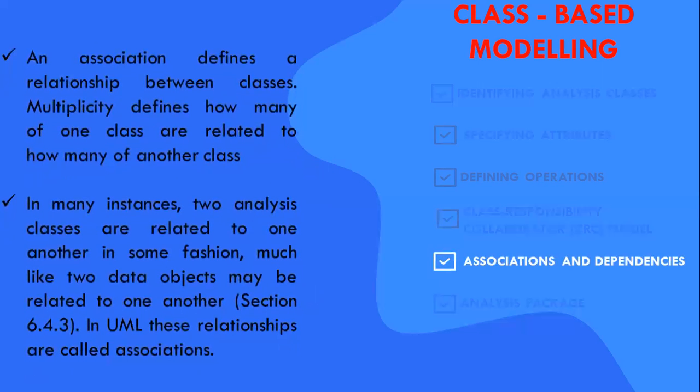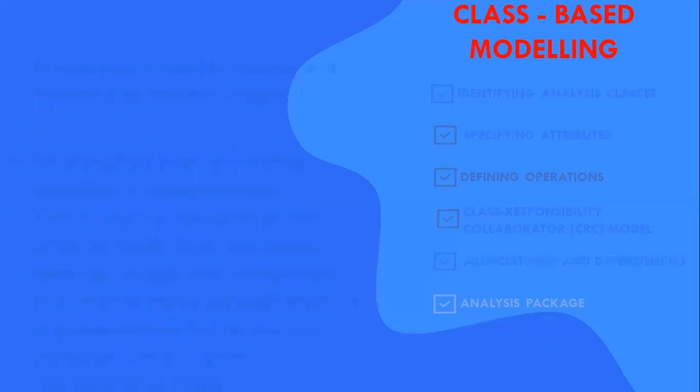Coming to associations and dependencies. In many instances, two analysis classes are related to one another in some fashion, just like two data objects that may be related to one another. In UML, these relationships are called associations. In some cases, an association may be further defined by identifying multiplicity. Here, referring to the multiple constraints illustrated, one or more is represented by using one and so on. In UML, the asterisk indicates an unlimited upper bound of a range.